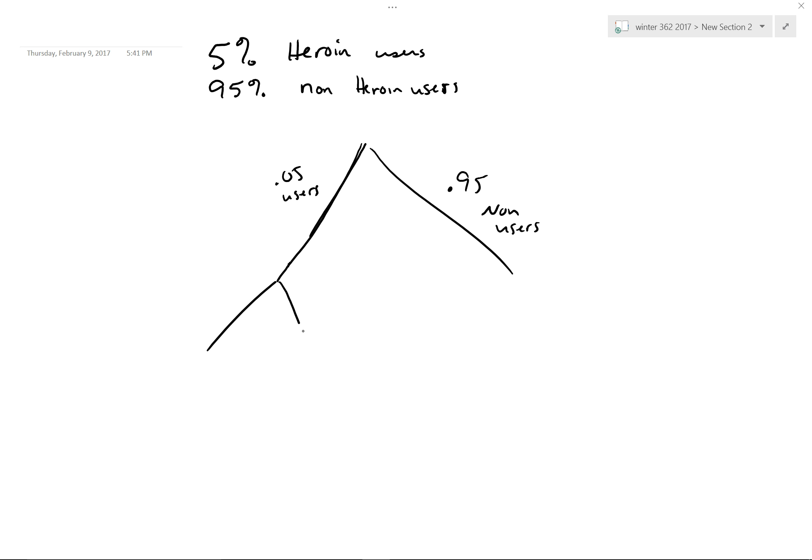Now every test will be different, and this is a Bayes theorem situation. Every test will be different in terms of how accurate it is in this situation or that situation. I can't speak to this particular example, I'm just going to make up a number.